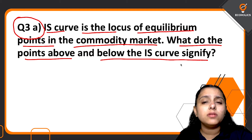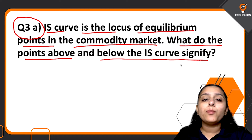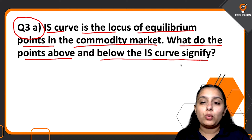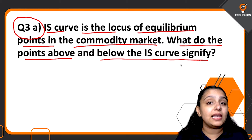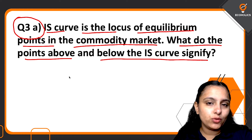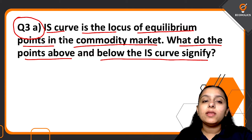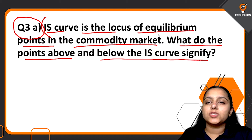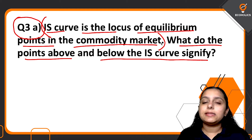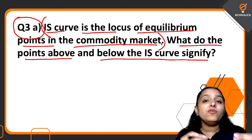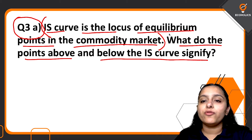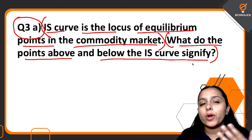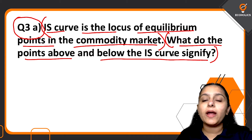It's a really simple question — points above and below the IS curve is something all of us would know if we have done the IS-LM model. But one thing you have to take care of: even though they have told us that the IS curve is the locus of equilibrium points in the commodity market, if you just jump directly to what the points above and below signify, your answer will not be appropriate.